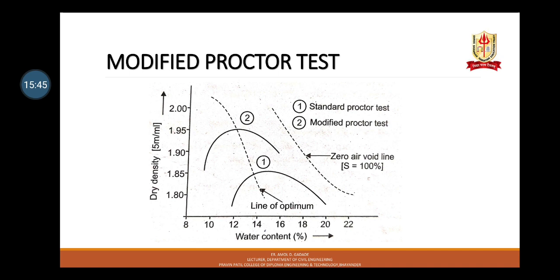Moving further to the modified proctor test. The modified proctor test was developed to represent heavier compaction than in the standard proctor test. This test is used to simulate field conditions where heavy rollers are used. In the modified proctor test, the mould used is the same as in the standard proctor test. However, the rammer used is much heavier with a greater drop — its mass is 4.89 kg and the free drop is 450 mm. The face diameter is 50 mm, same as in the standard proctor test. The soil is compacted in 5 equal layers, each layer given 25 blows. The compaction effort in the modified proctor test is about 4.56 times that in the standard proctor test.